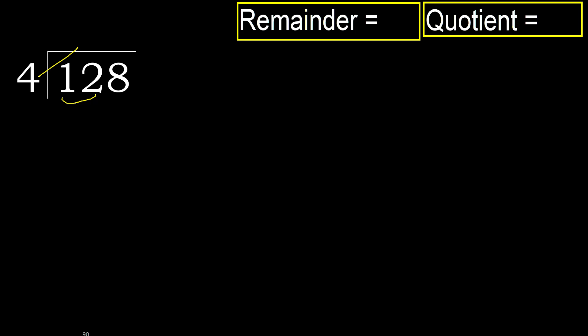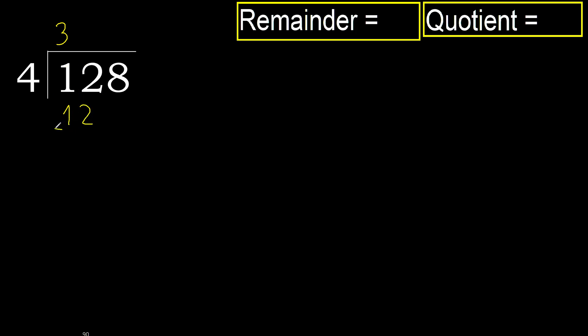4 multiplied by 4 is 16 — 16 is greater. 4 multiplied by 3 is 12 — 12 is not greater. Subtract 0, next.